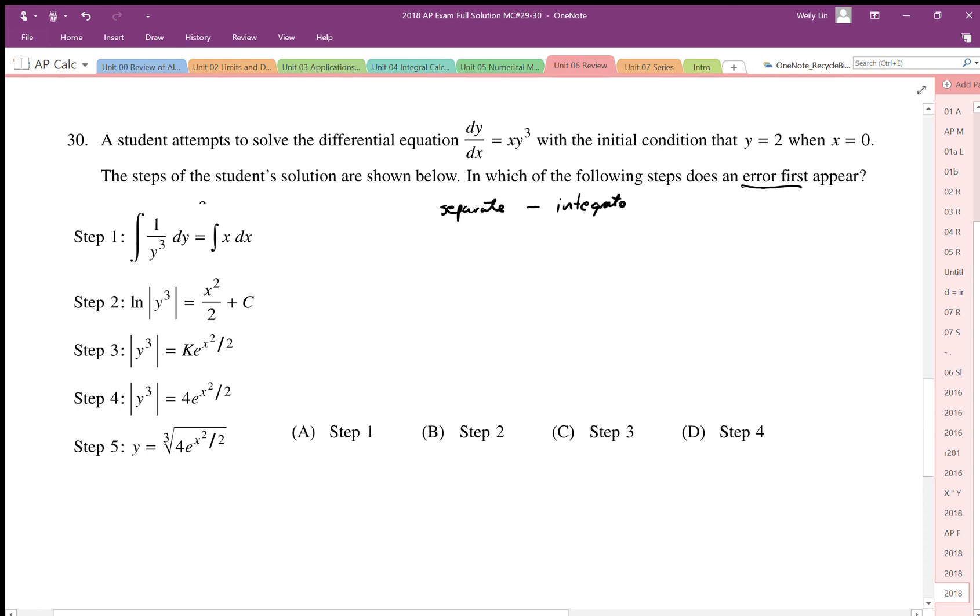We're going to separate then integrate. The first step here looks like they separated the dy with the y and dx with the x, so that's okay. The second step though, when we integrate 1 over y cubed, this is not a log, this is for only 1 over x. This is power rule, so they did not apply power rule from here to here. So this is where the first error then must occur. The answer must be B, it happens in step 2.